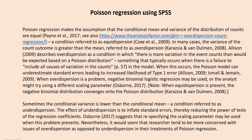When overdispersion occurs, the Poisson model can underestimate standard errors, leading to an increased likelihood of type 1 error. When overdispersion is a problem, a negative binomial logistic regression may be used, or the analyst might try using a different scaling parameter. When equidispersion is present, the negative binomial distribution will converge onto the Poisson distribution.